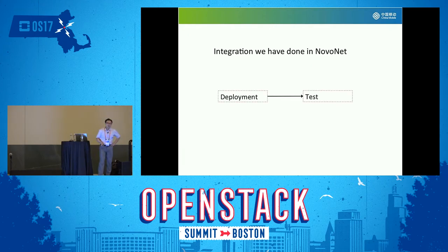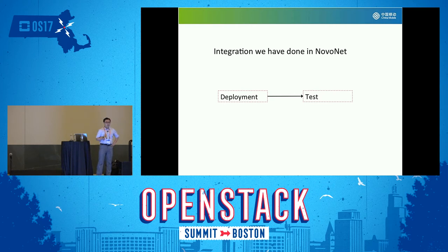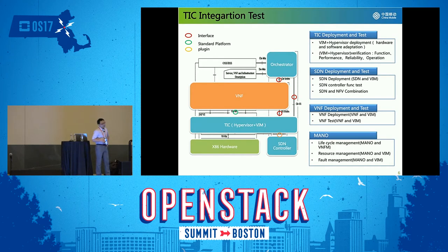Next, I will introduce our practice inside China Mobile — how to do the test in our NFV project, the Non-Net project. Mostly we do two jobs: one is deployment, another is test. This is the architecture. I will introduce the process of what we have done during our Non-Net project.